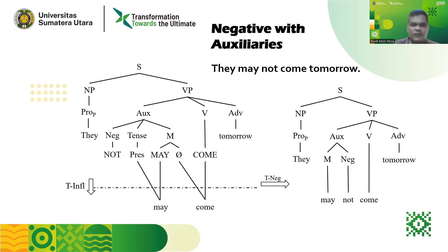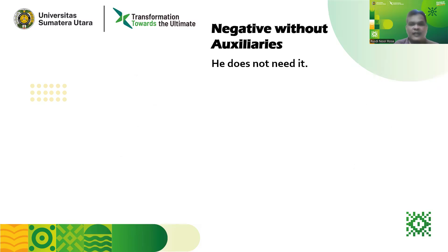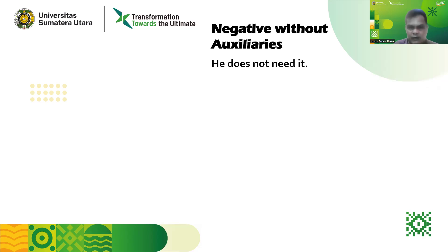Now let's go on with the second type of negative — that is, negative without auxiliaries. We take the sentence 'He does not need it' as the example. As you can see, we don't use an auxiliary, even though you may say that 'does' is an auxiliary. Yes, it is, but 'does' is actually a supporting auxiliary, because there are three main auxiliaries: 'to be,' modal, and perfect auxiliaries. 'Do/does/did' belongs to supporting auxiliary — it is only needed when the other three forms of auxiliaries do not exist.